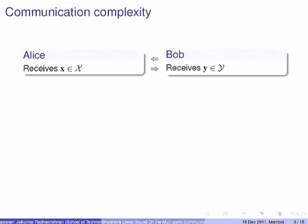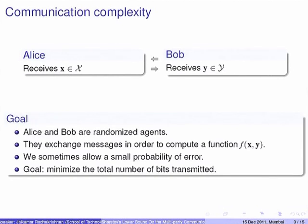Much of it will be very trivial for the experts, but the experts are free to correct me when I am wrong. So, what is communication complexity? There are two parties — we call them Alice and Bob. They each have an input: Alice's input is X, Bob's input is Y, and they communicate with each other by sending messages.